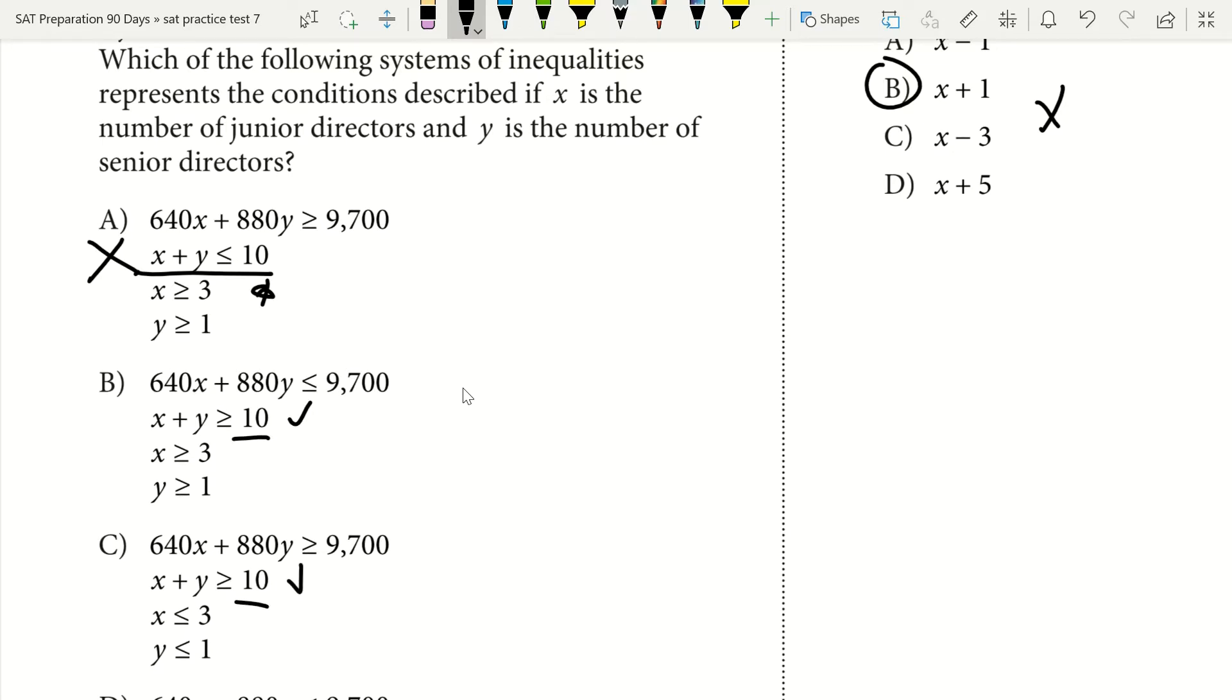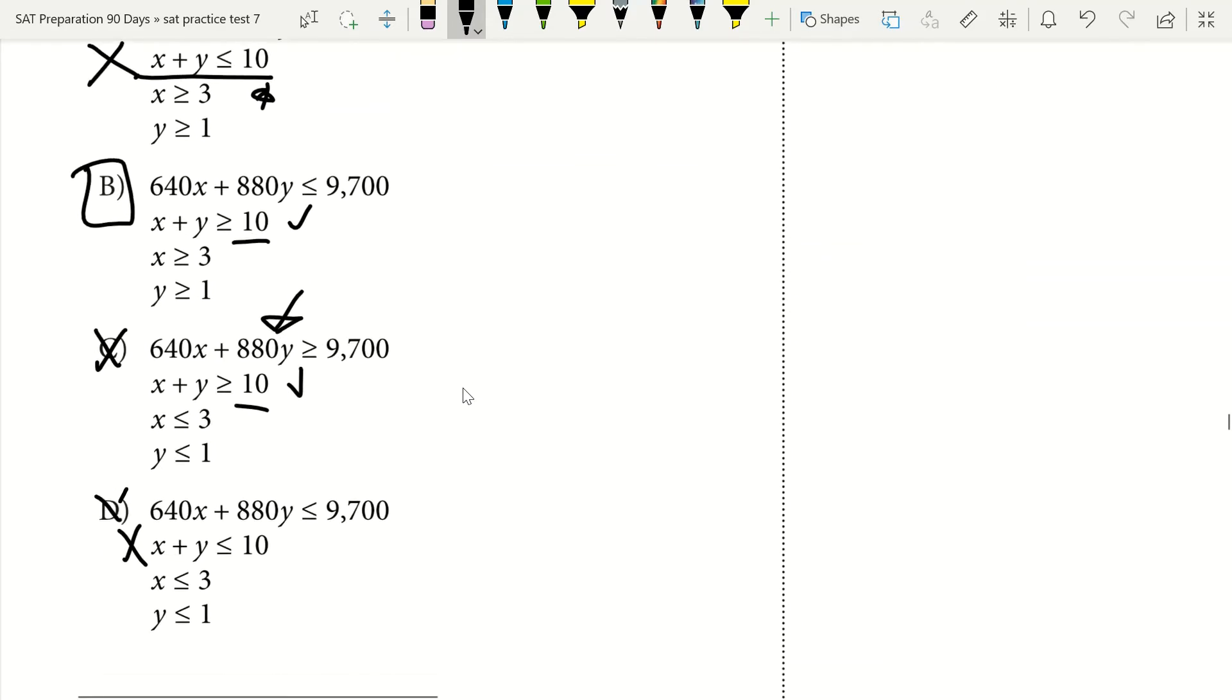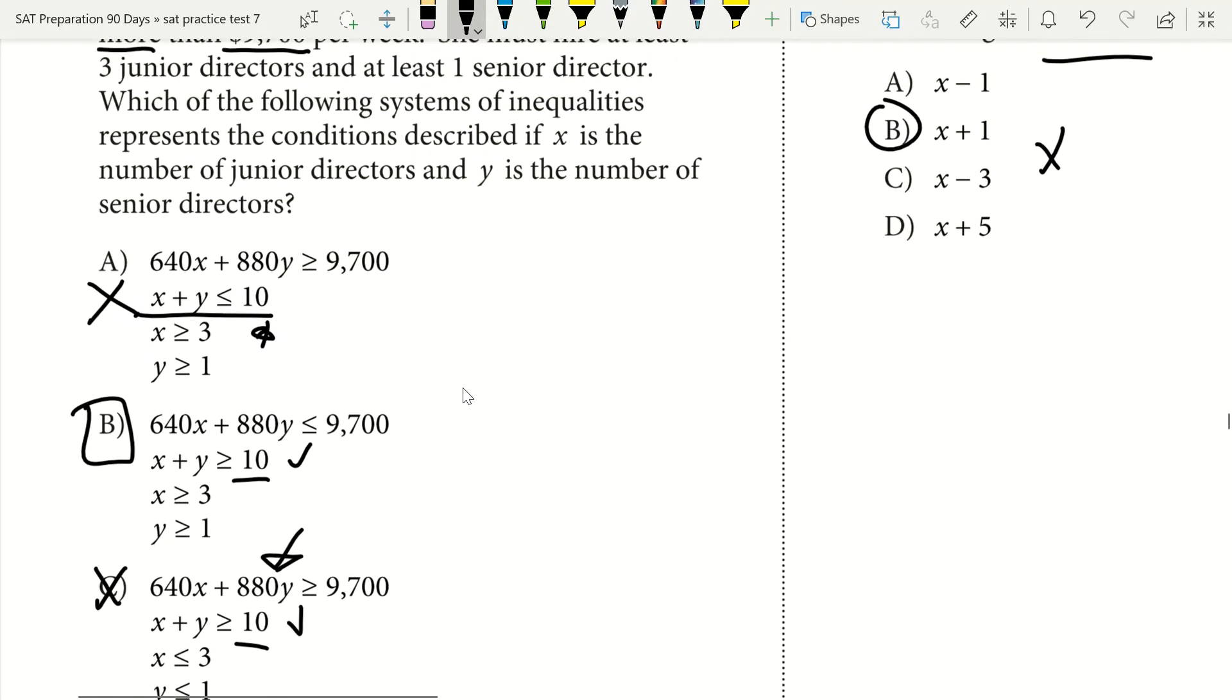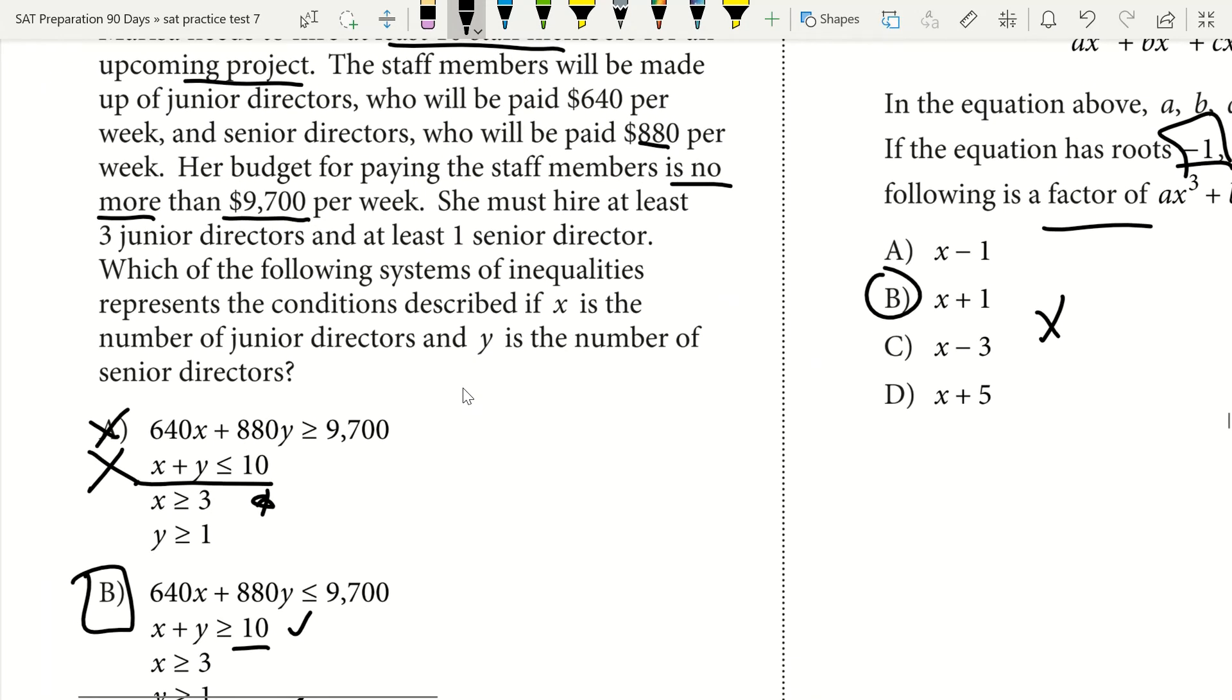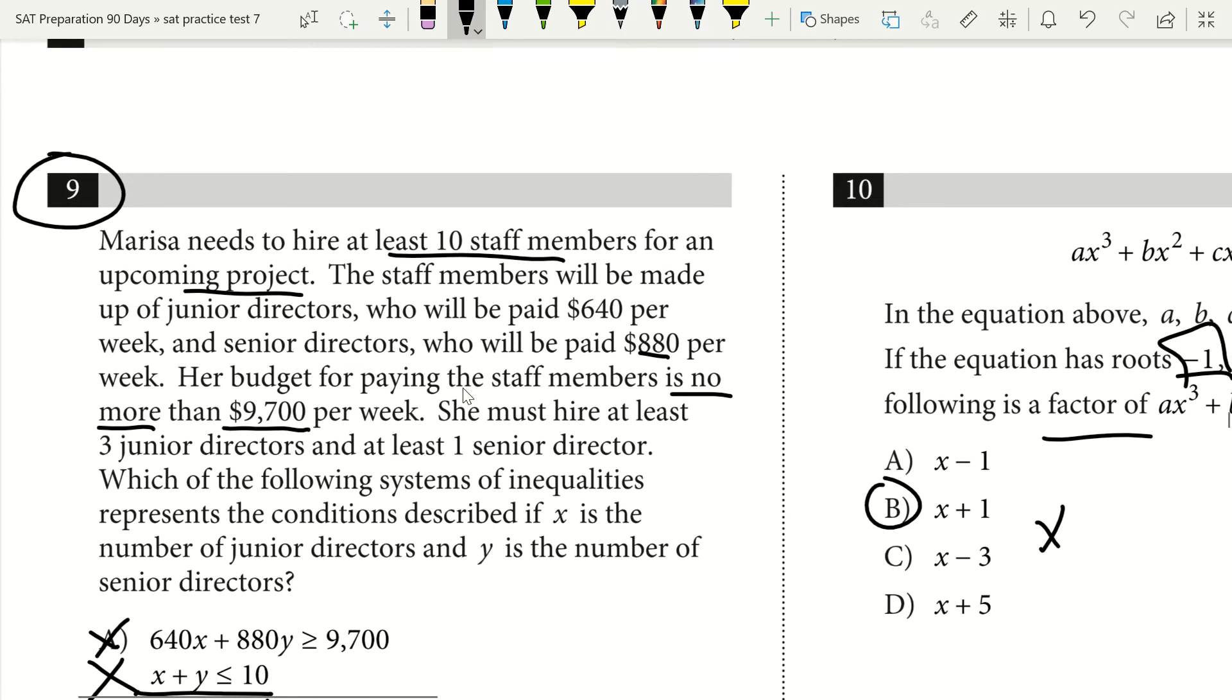The next thing I'm looking at is it said no more than $9,700. In C it shows it does have more, so C is wrong. B will be my correct answer just based on that. If I was in a rush I would just select B and move on. But if we had plenty of time and wanted to check our work, we could keep reading.